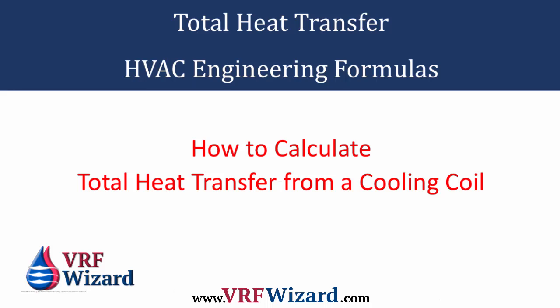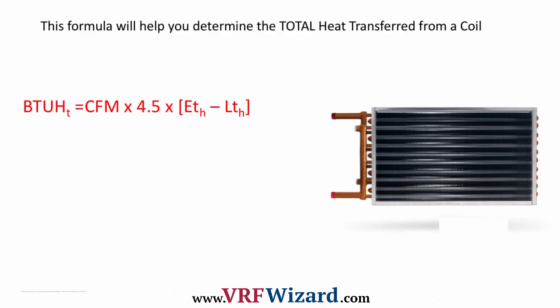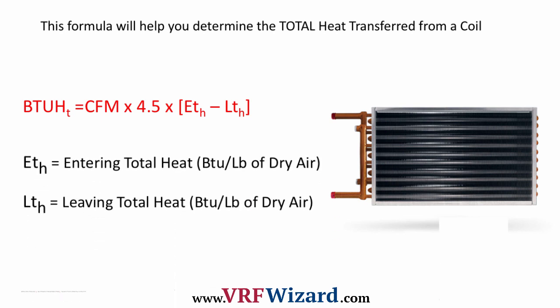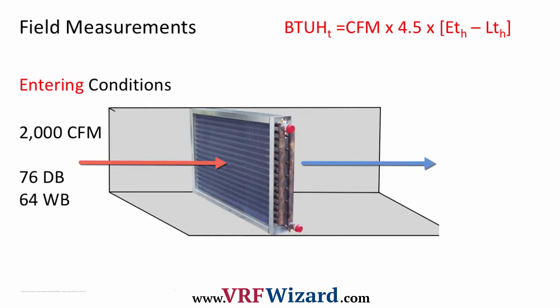We're going to cover total heat transfer — how to calculate the total heat transfer from a cooling coil. The formula is: BTUs per hour total equals the amount of CFM going over the coil times 4.5, which is a constant, times the delta enthalpy — the change in total heat content of the supply air. So you have the entering total heat minus the leaving total heat.